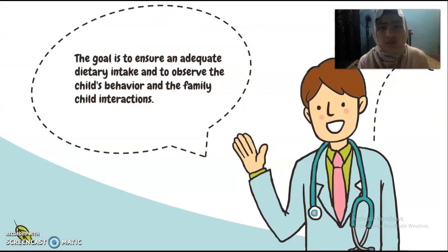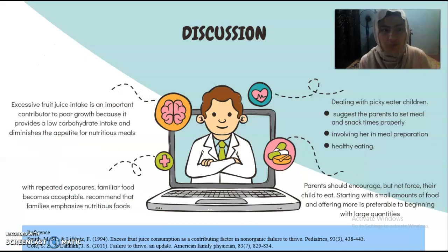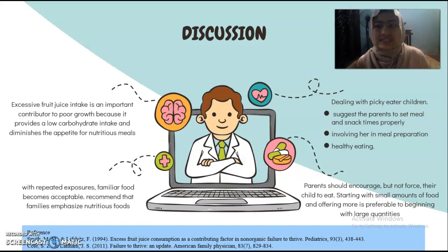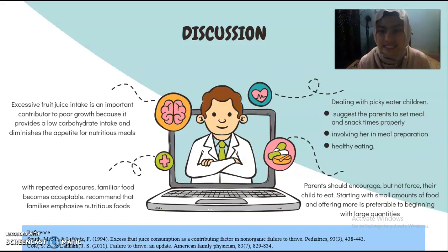For the discussion, the goal is to ensure adequate dietary intake and to observe child behavior and family-child interaction. Excessive low-nutrient food consumption is an important contributor to poor growth, as it provides low caloric intake and diminishes appetite for nutritious meals. With repeated exposure, family foods become acceptable. We recommend families emphasize nutritious food. To deal with picky eater children, we suggest parents establish meal and snack times, involve children in meal preparation, encourage variety with healthy eating, and encourage but not force children to eat. Starting with small amounts of food and offering more is preferable to beginning with large quantities.